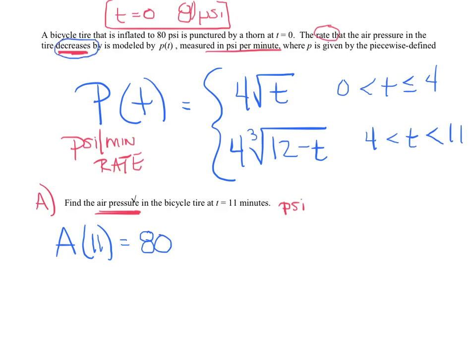80 is already in PSI, and I'm finding the PSI. That means I'm going to need to integrate P of t dt. If I started with 80 as my initial condition, my initial time is 0, and I want this answer at time 11.